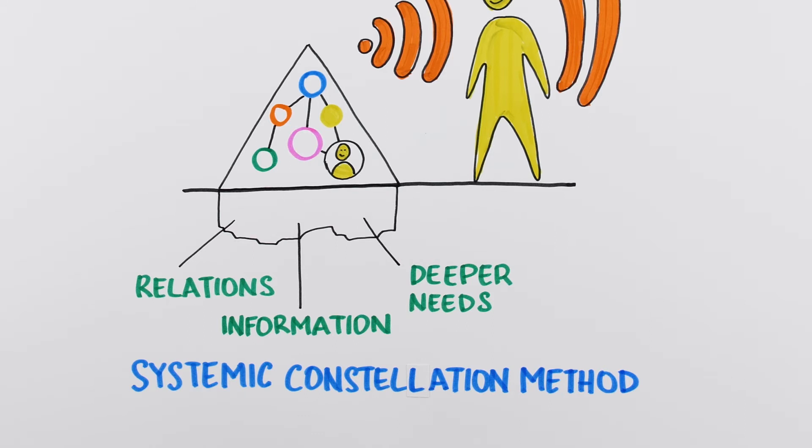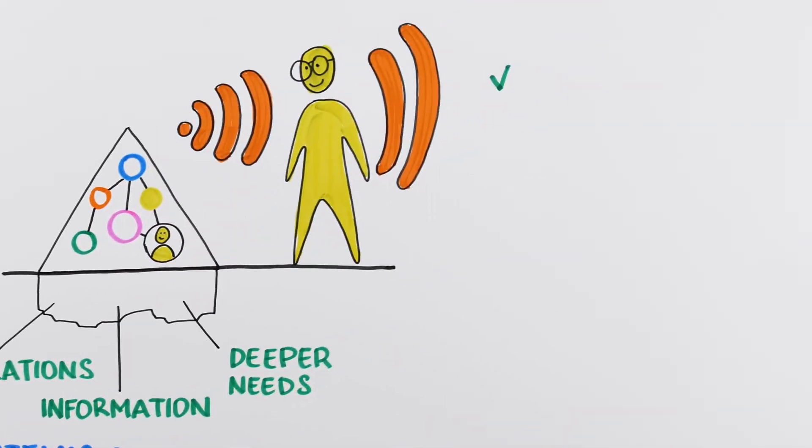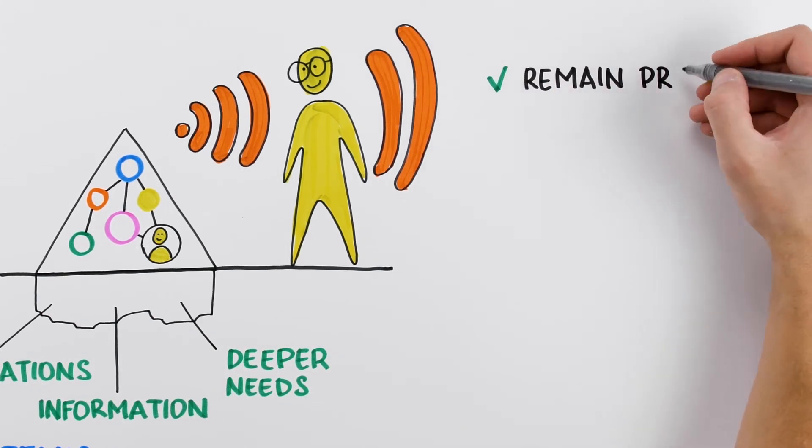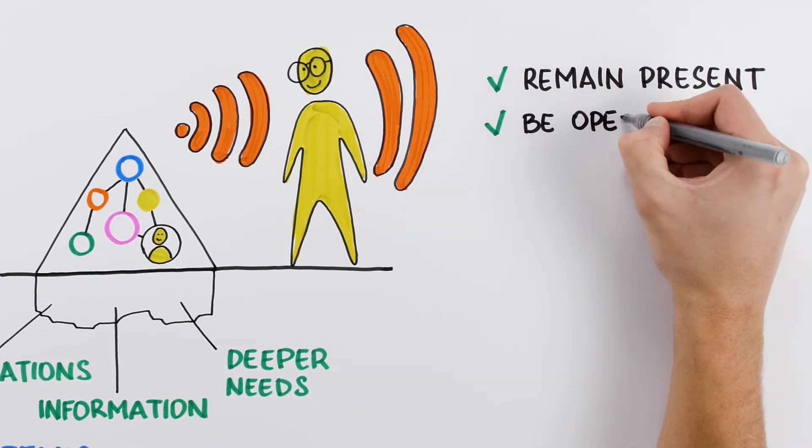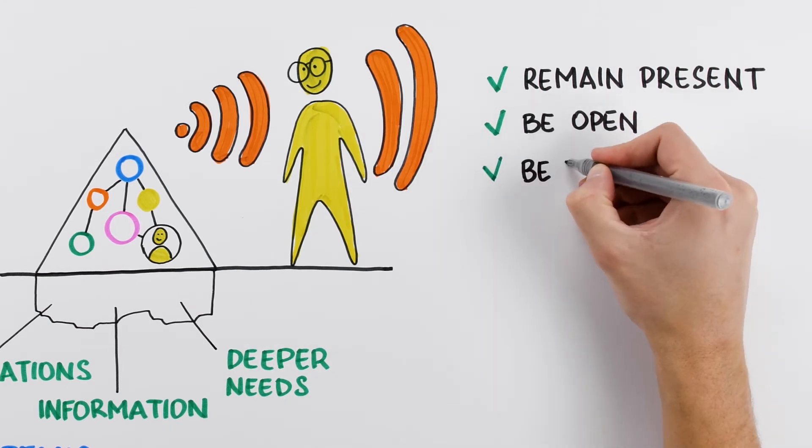So, how do you apply and practice the systemic view? First, you have to change the direction of your efforts. Instead of trying hard to understand what is going on, typical for the analytical approach, try to remain present.